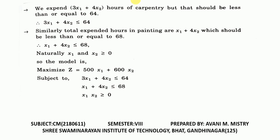Similarly, total hours expended in painting are x1 plus 4x2, which should be less than or equal to 68. Naturally, x1 and x2 are greater than or equal to 0. So the model is: Maximize Z equals 500x1 plus 600x2, subject to: 3x1 plus 4x2 less than or equal to 64; x1 plus 4x2 less than or equal to 68; and x1, x2 greater than or equal to 0.